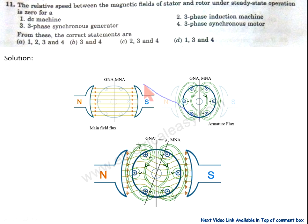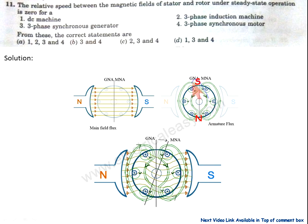In the DC machine diagram, the main field flows from N to S — that is outside the magnet. The armature MMF and armature flux are set up such that N and S poles are created. The magnetic lines are flowing inside the magnet, so magnetic lines flow from S to N. These poles are introduced due to the armature flux. We can see that the S pole attracts the N pole and this N pole attracts the S pole.